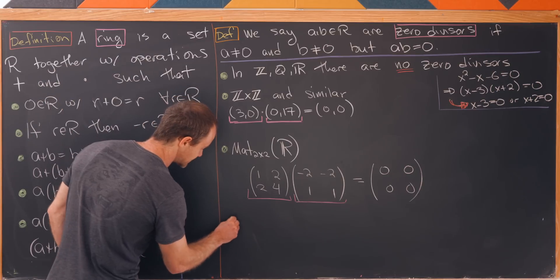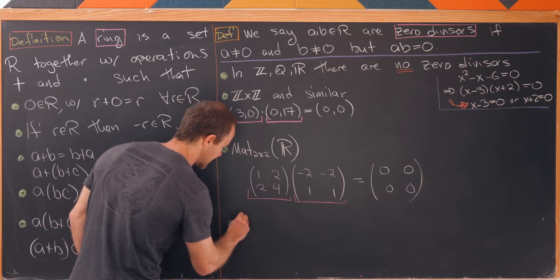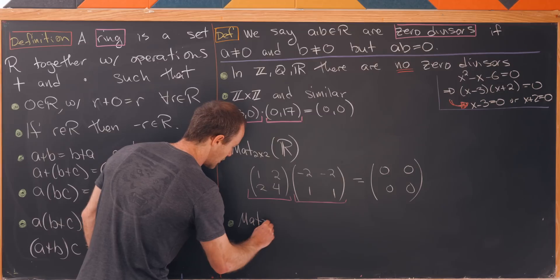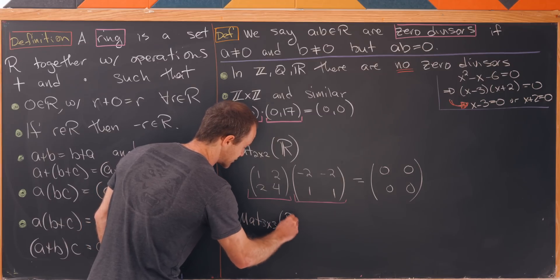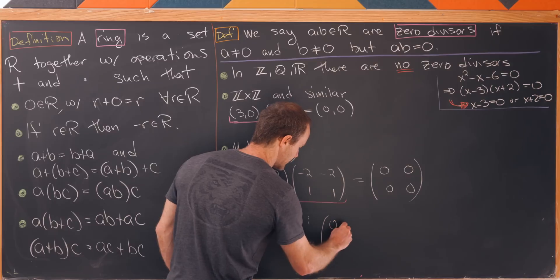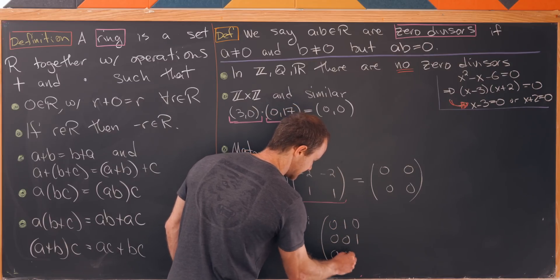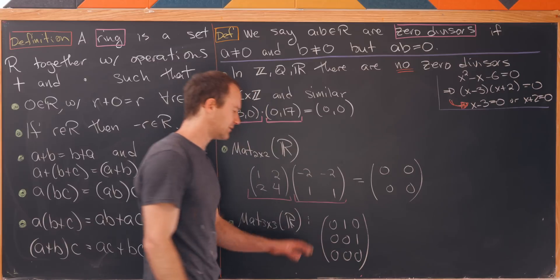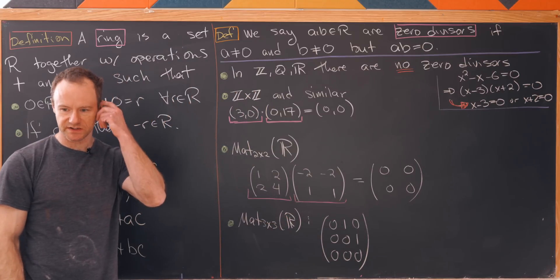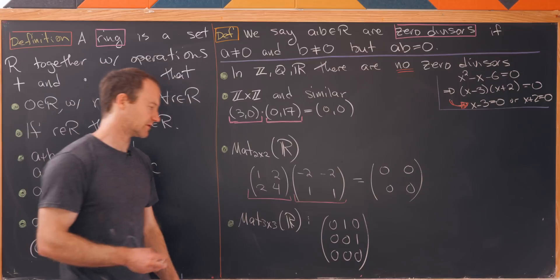Now inside matrices you can find tons of examples like for example we could look inside of the 3 by 3 matrices with real entries at something like this. What if we have [[0,1,0],[0,0,0],[1,0,0]] and you might say well that's only one matrix. We need something else to make it into a zero divisor.